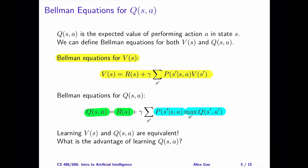There are pros and cons of learning the V values versus learning the Q values. For example, one advantage of learning the Q values is that we do not need to learn the transition probabilities. I will explain this idea in more detail shortly.